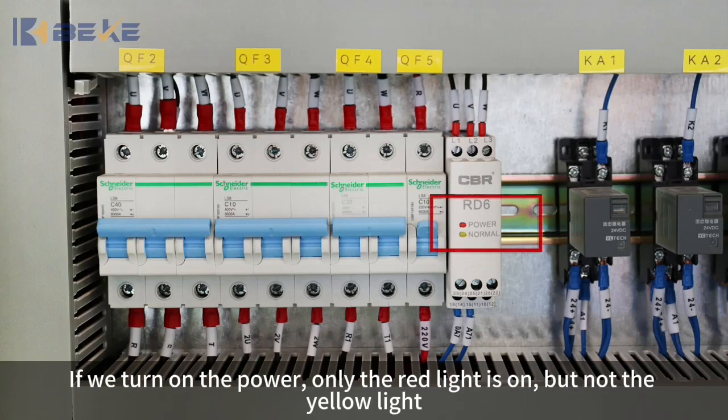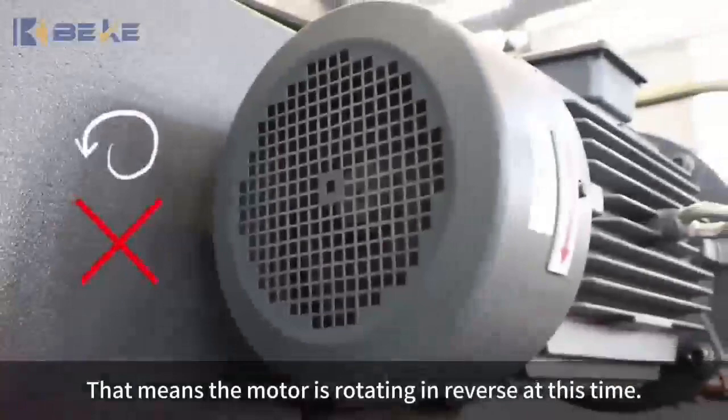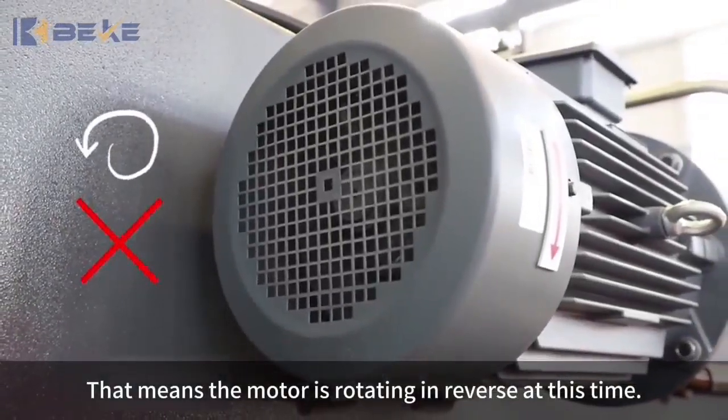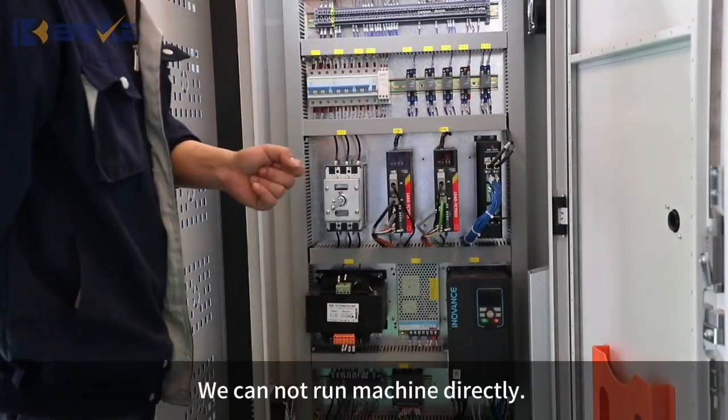If we turn on the power, only the red light is on but not the yellow light. That means the motor is rotating in reverse at this time. We cannot run machine directly.